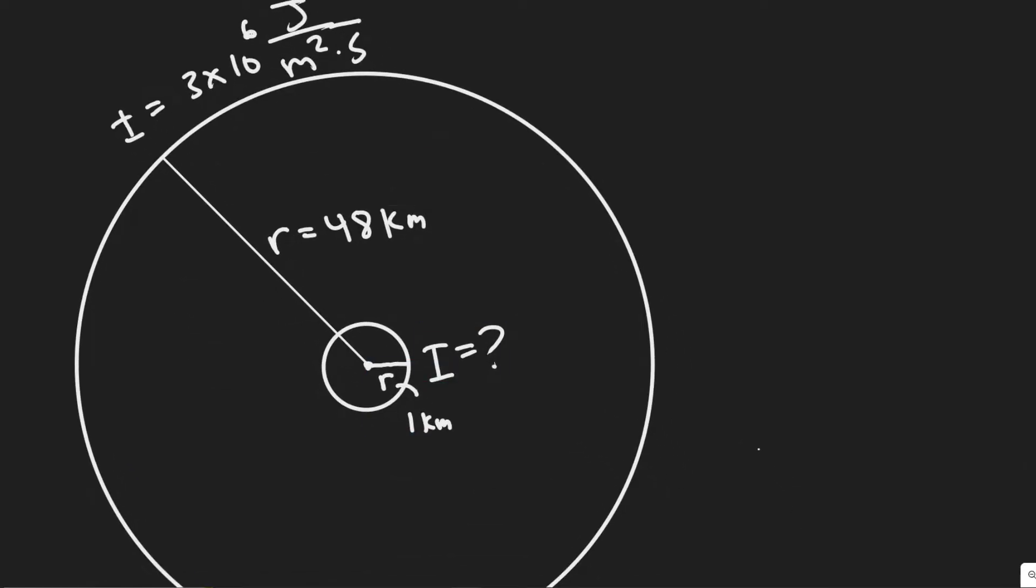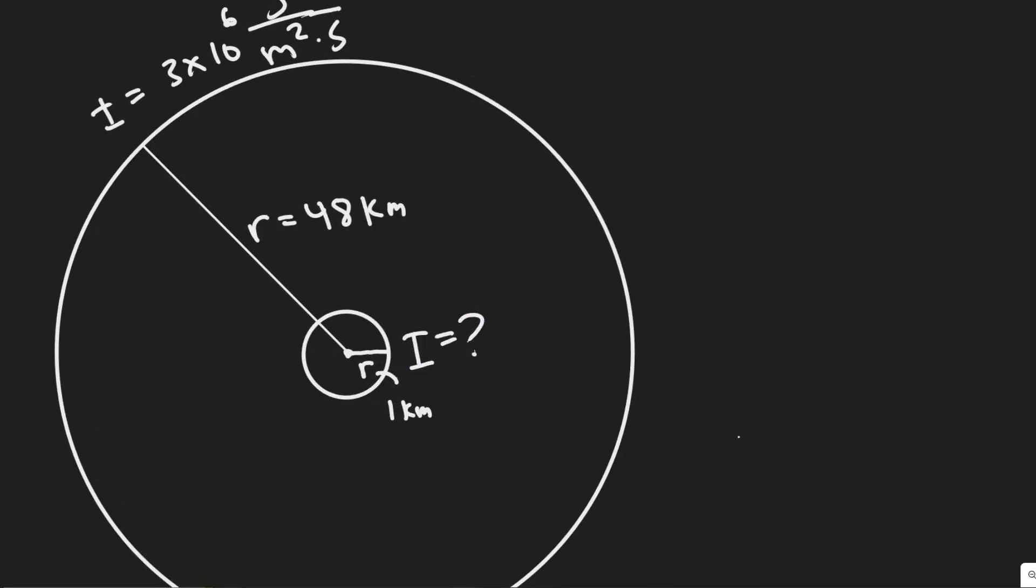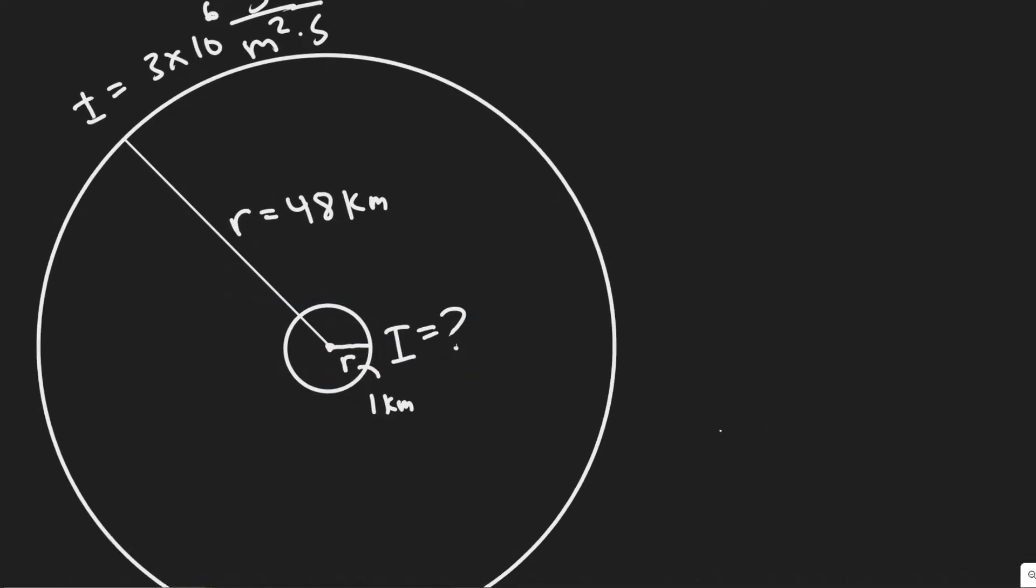And so we know that and what we're trying to do is find the intensity at 1 kilometer out. And so how are we going to use the information they give us to find the intensity of the wave when it's only 1 kilometer out?